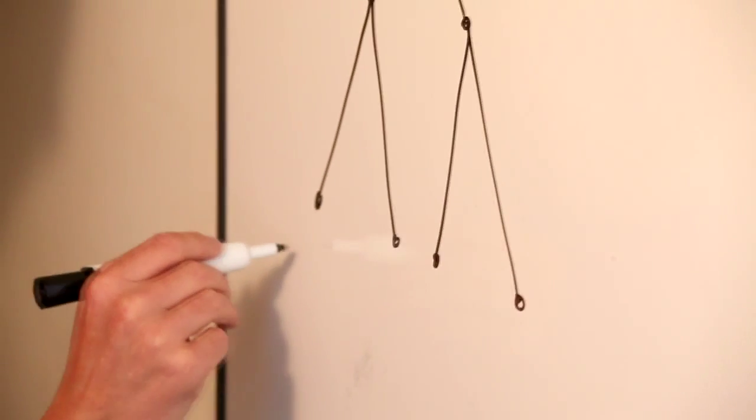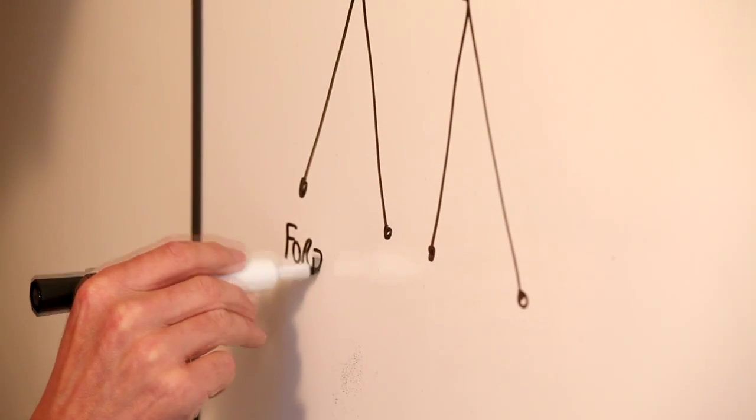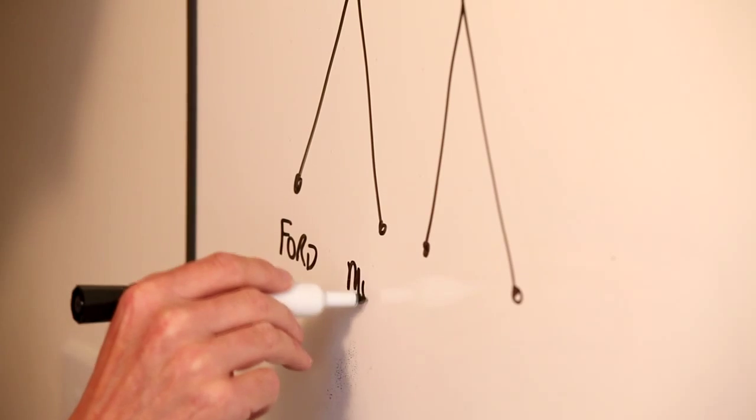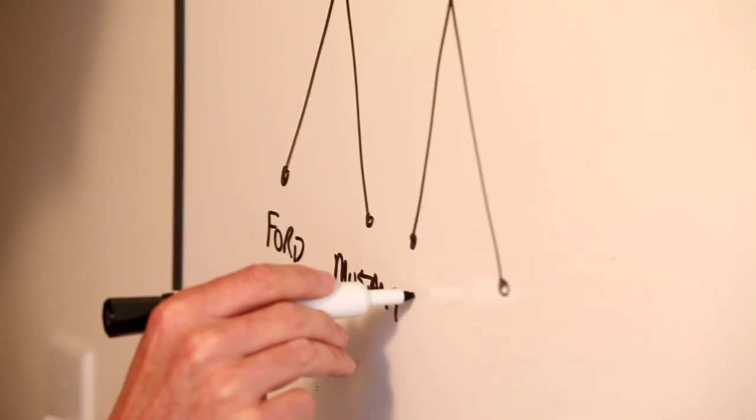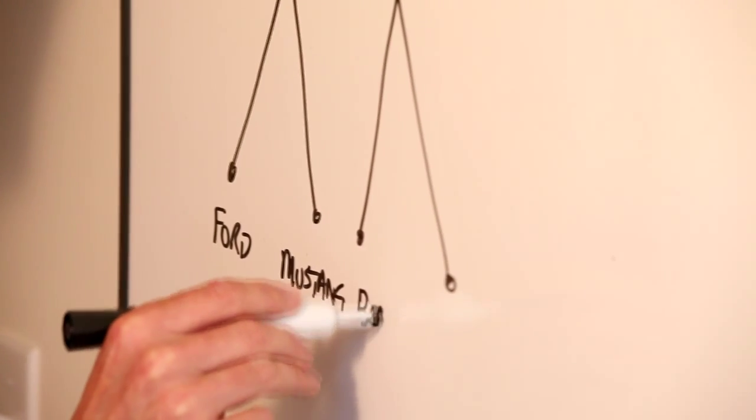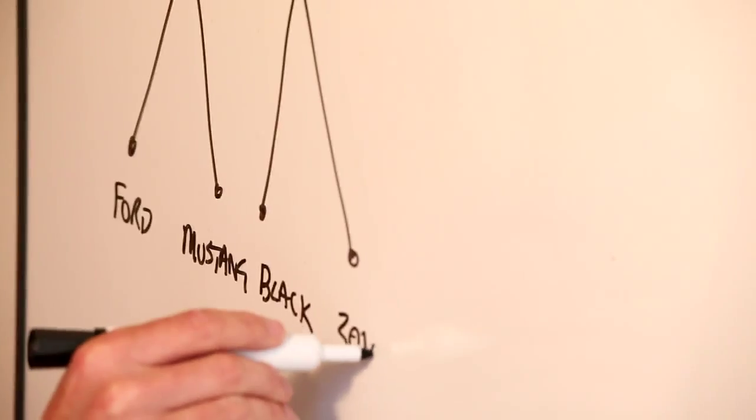And at the leaves of the binary tree, we assign values from the different fields. So for our first record, we've got Ford, its model is a Mustang, its colour is black, and its age is 2010. So that represents one record.